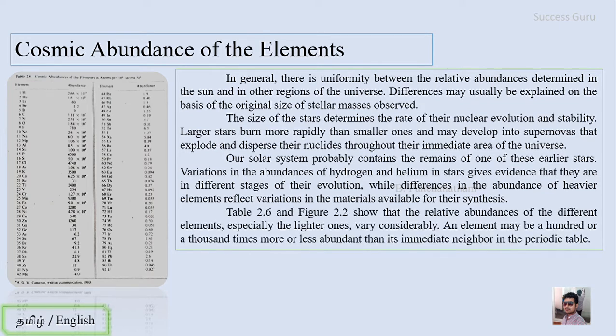Table 2.6 as well as Figure 2.2 that I will be sharing in the next slide shows that the relative abundances of different elements, especially the lighter ones, vary considerably. An element may be hundreds or even thousands times more or less abundant than its immediate neighbor in the periodic table.